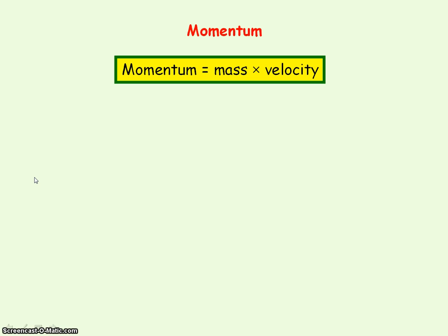Momentum is defined as the product of mass and velocity and this is its equation. In symbols, momentum is given the letter p.